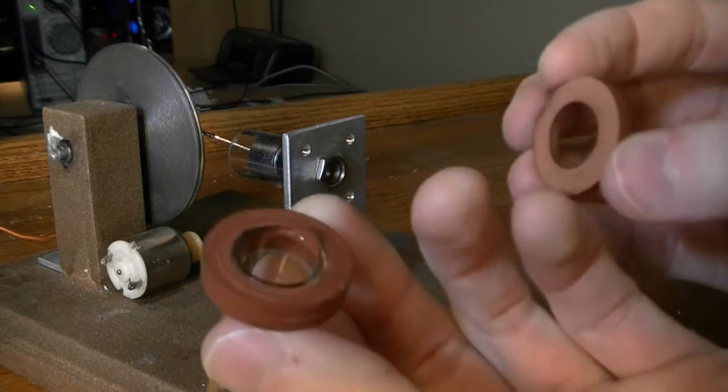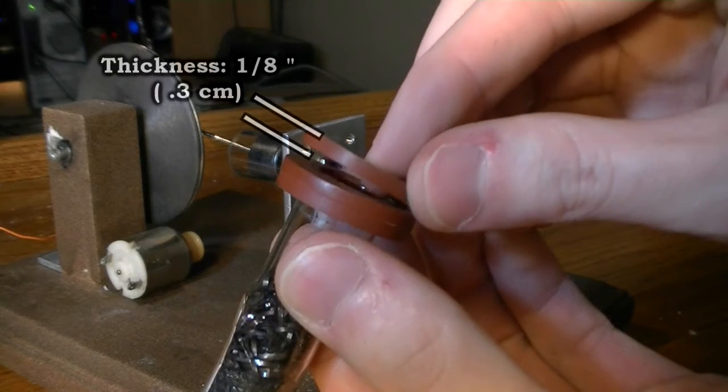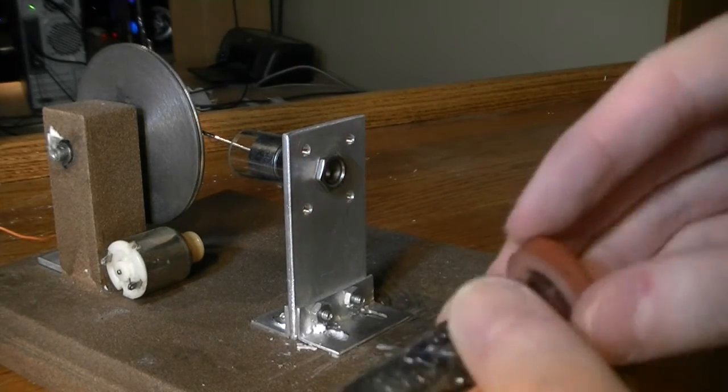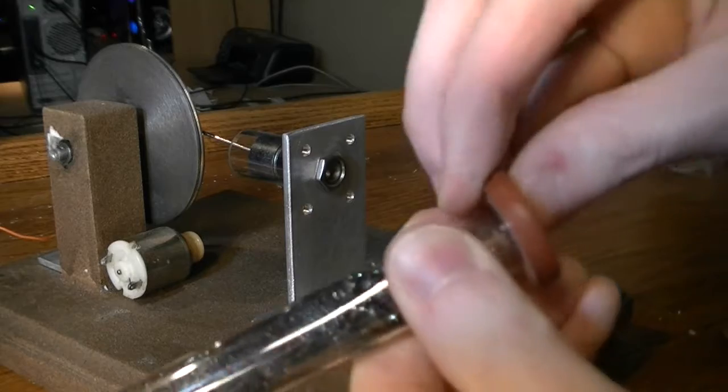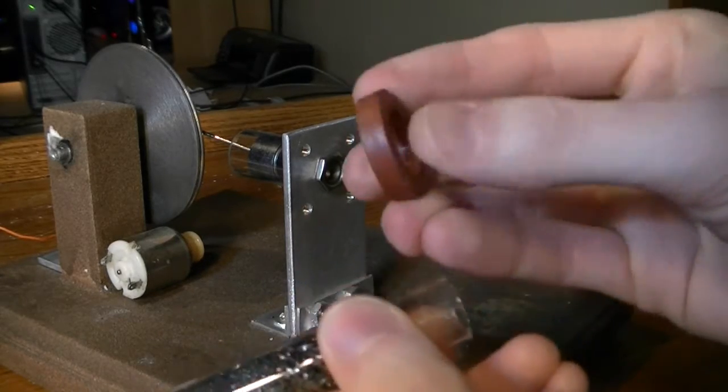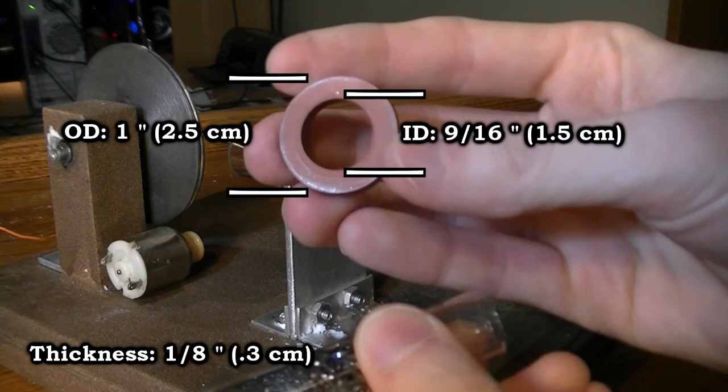These orange rubber washers have the perfect inner diameter to fit tightly around the Pyrex test tube. It's important that everything is airtight or this engine won't run as well as it could. The outer diameter of one of these rubber washers is one inch and the inner diameter is nine sixteenths of an inch.